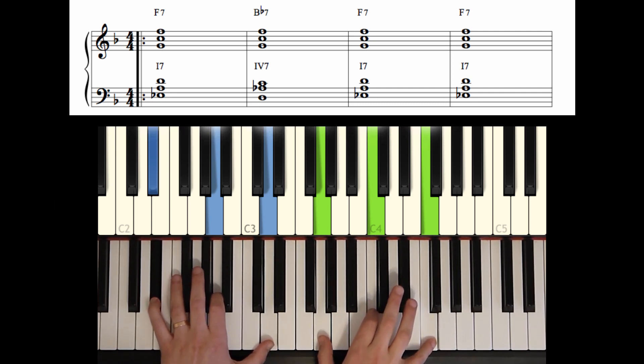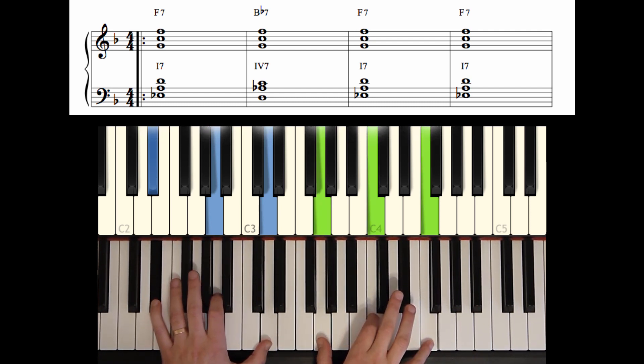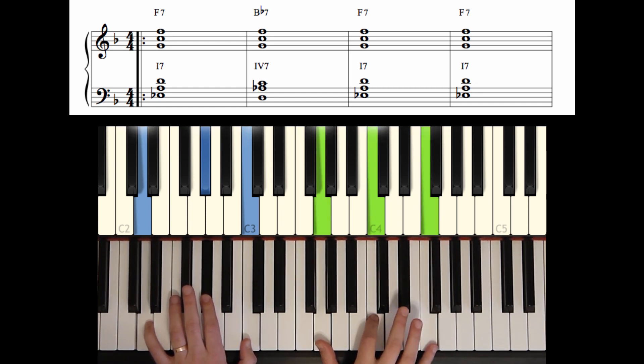To get to our next chord, B flat 7, we're going to keep the same structure in our right hand, and we're just going to move the left hand down to that. D, A flat, C. So again, we have a 3rd and 7 holding down the bottom of the voicing. Then the 9, 13, we have another 9, and then the 5th on top. So this gives us our B flat 7. That's the 4 chord.